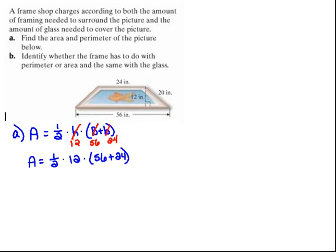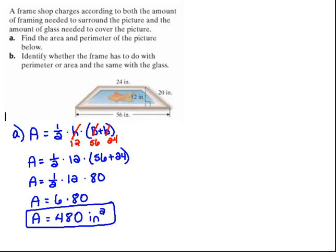And now we have A equals 1 half times 12 times 56 plus 24. So doing order of operations, we'd have to do the parentheses first, which 56 plus 24 would be 80. And now we can continue with our multiplication. 1 half of 12 is 6, and then 6 times 80 would be 480. Area is always in square units, so that would be 480 square inches.